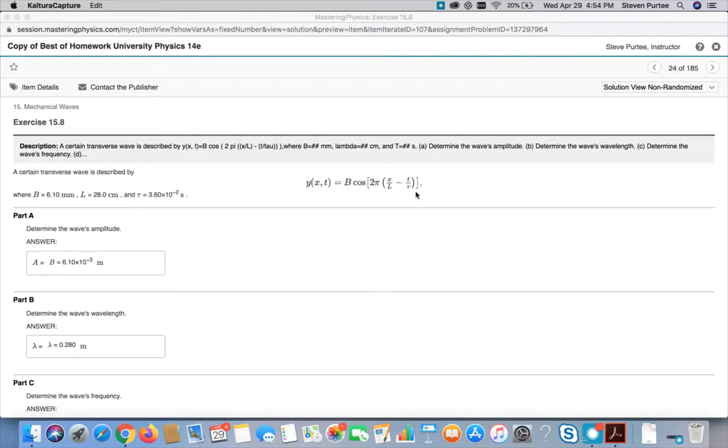k is the wave number and omega is the wave frequency. Another way to write that is a 2pi over lambda x minus 2pi over t for period, capital T, t.